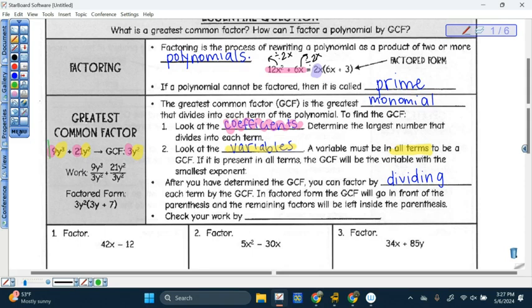So look at what they do here. They take this 9y cubed and they are going to divide it by the greatest common factor, divided by the 3y squared. And then they take the 21y squared. And again, they're dividing it by the greatest common factor, by 3y squared. So if I divide 9y cubed by 3y squared, I get 3y. 9 divided by 3 is 3. And then if I divide 21y squared by 3y squared, I end up with just 7. 21 divided by 3 is 7. y squared divided by y squared cancels out.